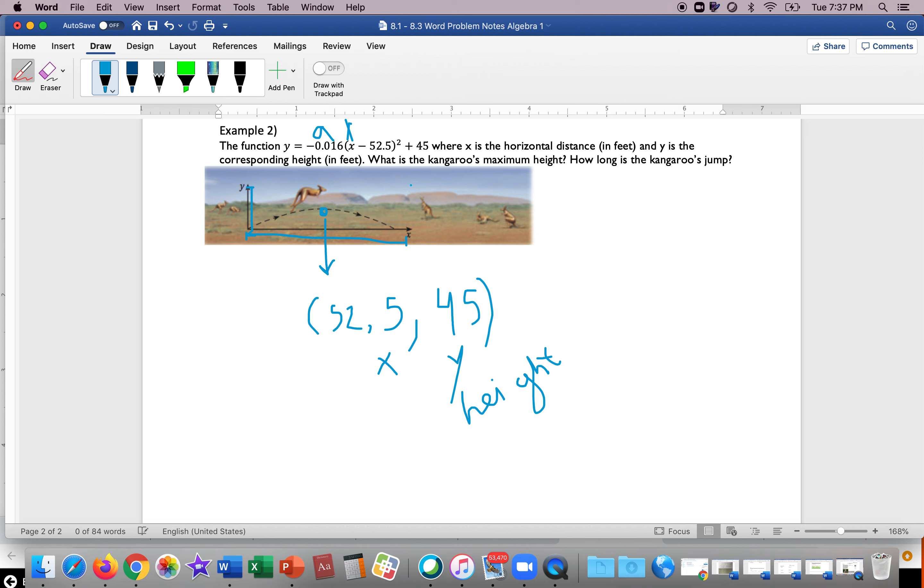Let's read the word problem. The function where x is horizontal distance, okay, so the x-axis represents the distance—horizontal distance, right? This is horizontal distance, and then this is y, the vertical distance, how high it jumps off the ground.